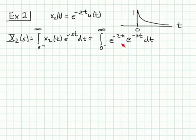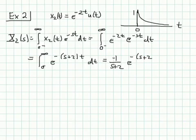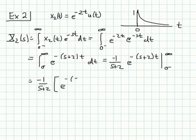We can combine the two exponential terms together to make calculation easier. So we have the integral from 0-minus to infinity of e^{-(s+2)t} dt. This is straightforward to integrate: it equals minus 1 over (s+2) times e^{-(s+2)t}, evaluated between 0-minus and infinity. Substituting in, we get minus 1 over (s+2) times [e^{-(s+2)·∞} minus e^{-(s+2)·0}].